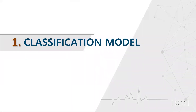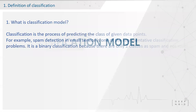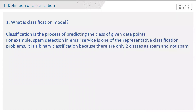So what is the classification model? According to the definition of a classification model, classification is the process of predicting the class of a given data point. For example, spam detection in an email service is one of the most common classification problems. It is a binary classification because there are only two classes: spam and not spam.